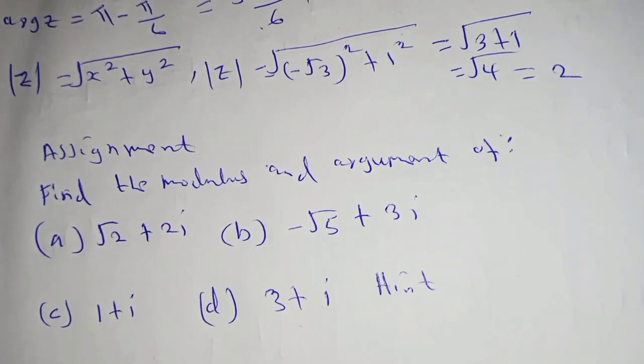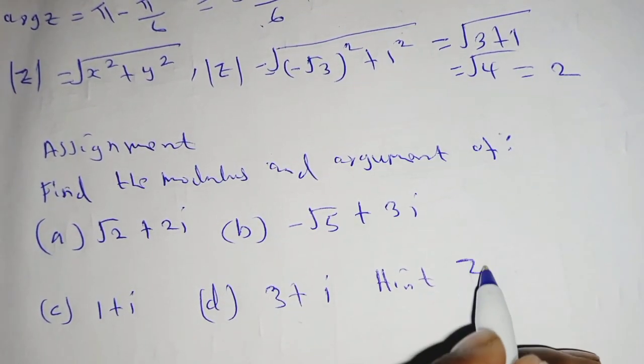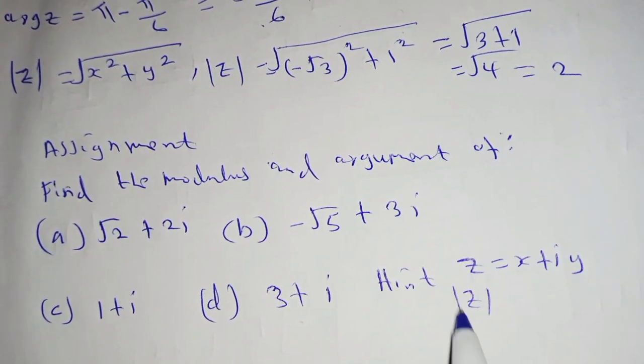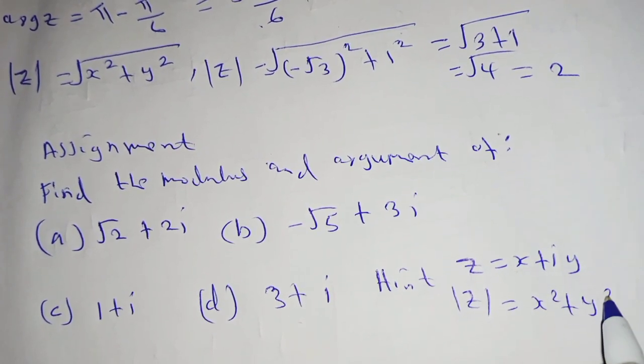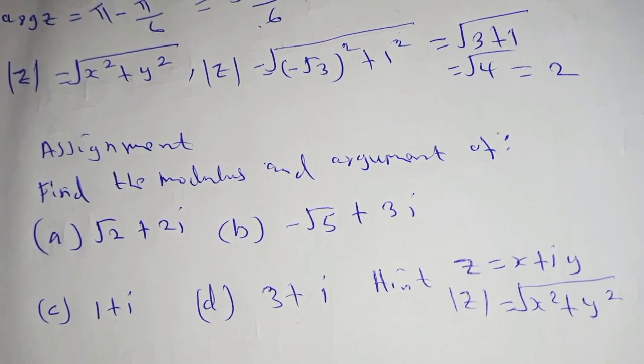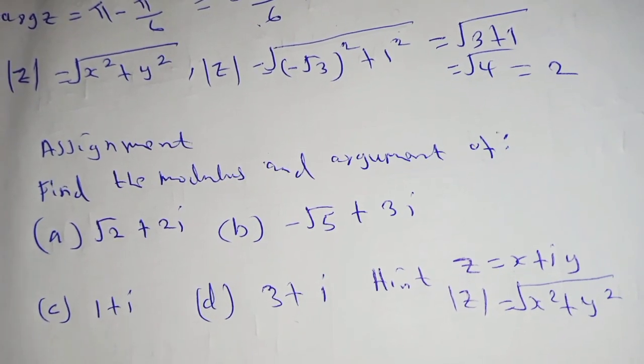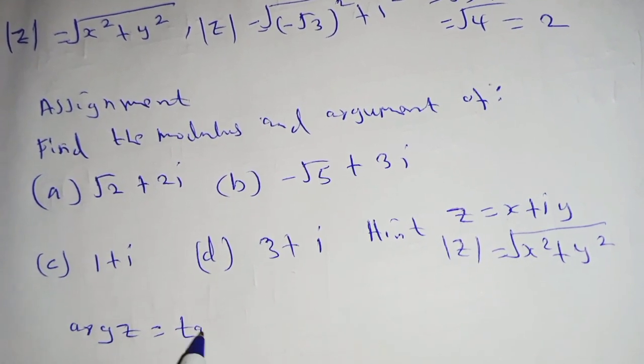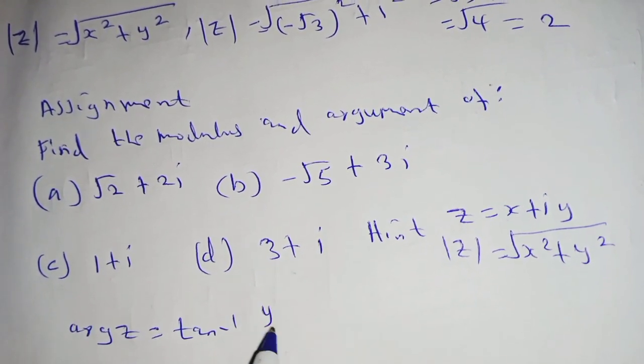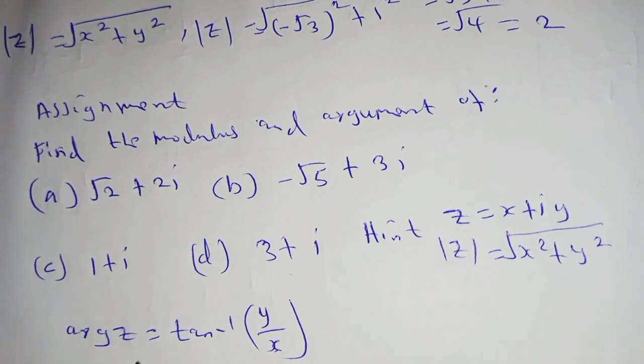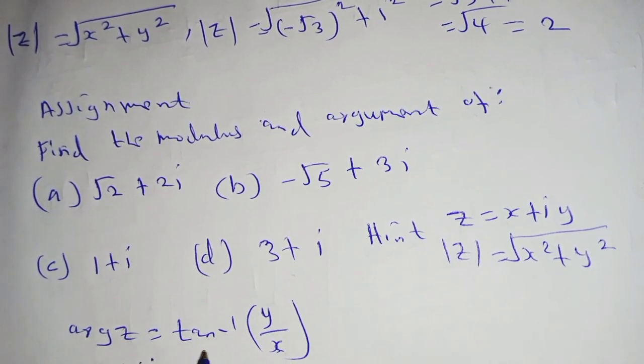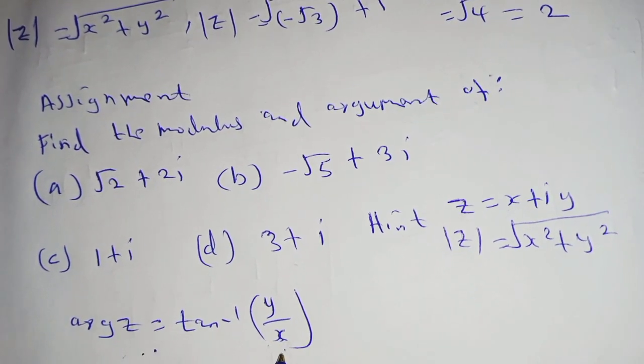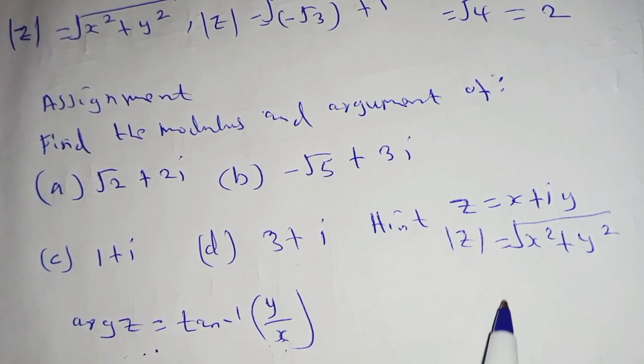Note that when you have z equal to x plus iy, z modulus is given by square root of x squared plus y squared, and the argument of z is given by tan inverse of y over x. Using this, the argument is tan inverse of y over x, where y is the complex part and x is the real part.